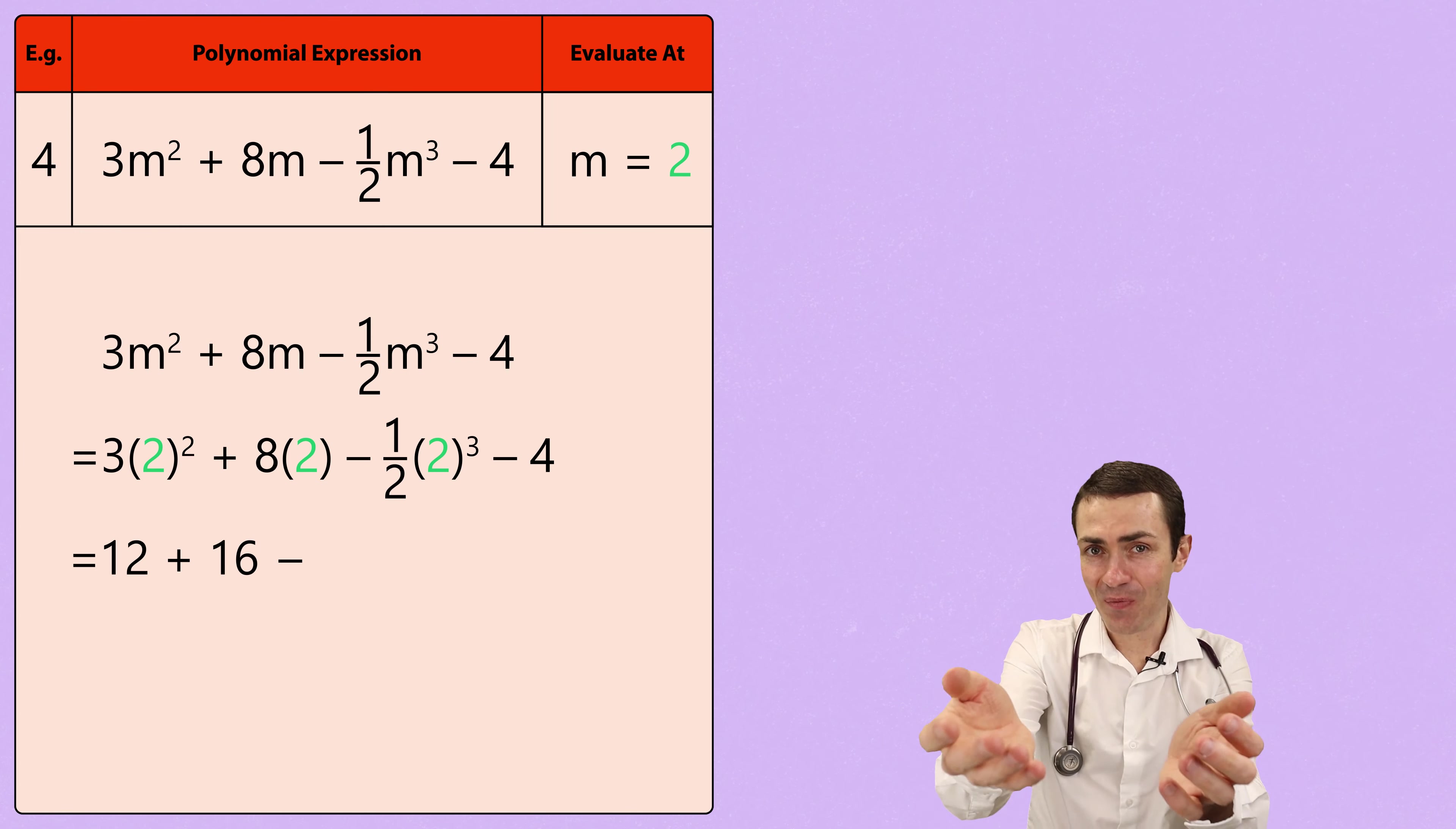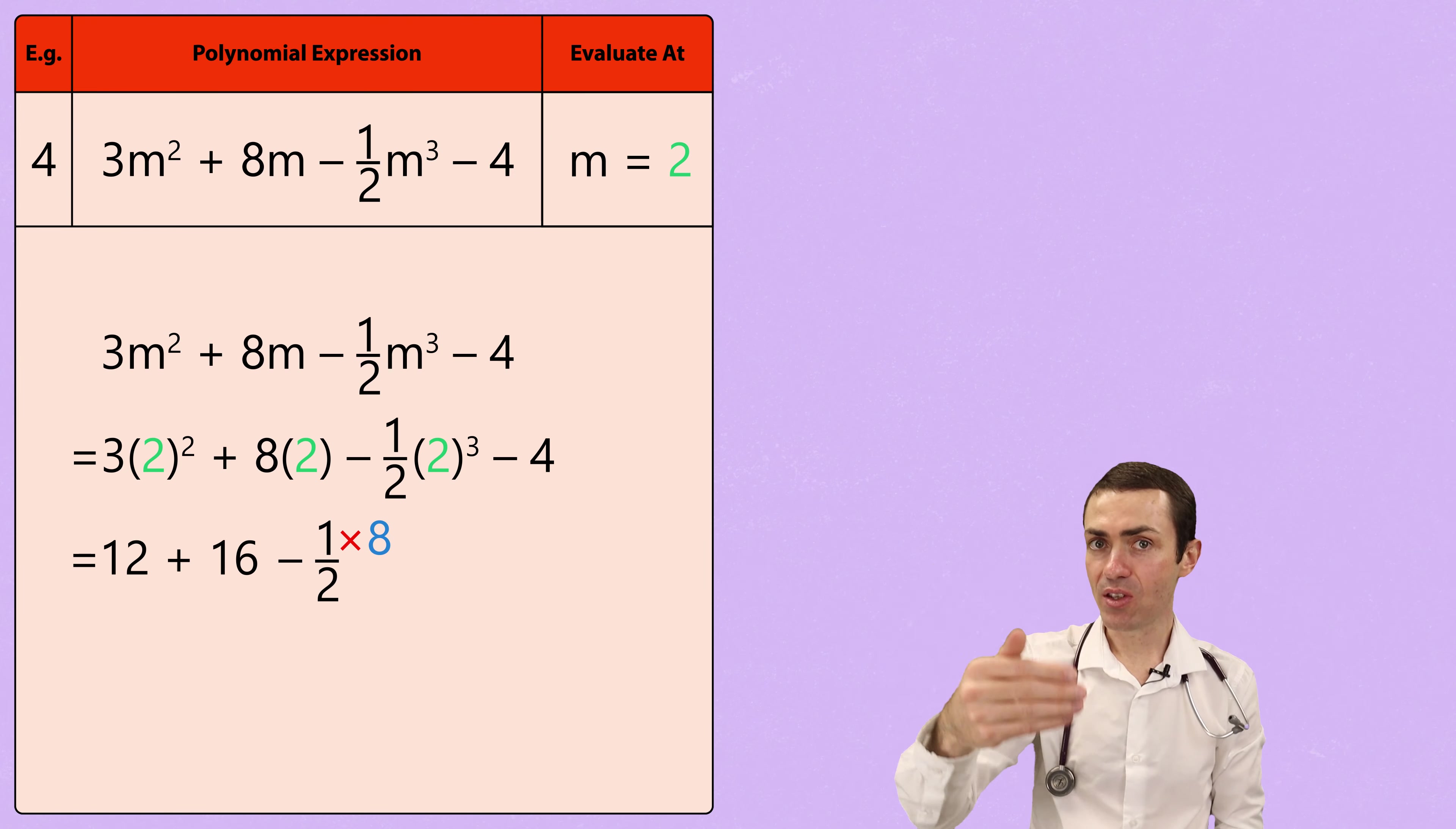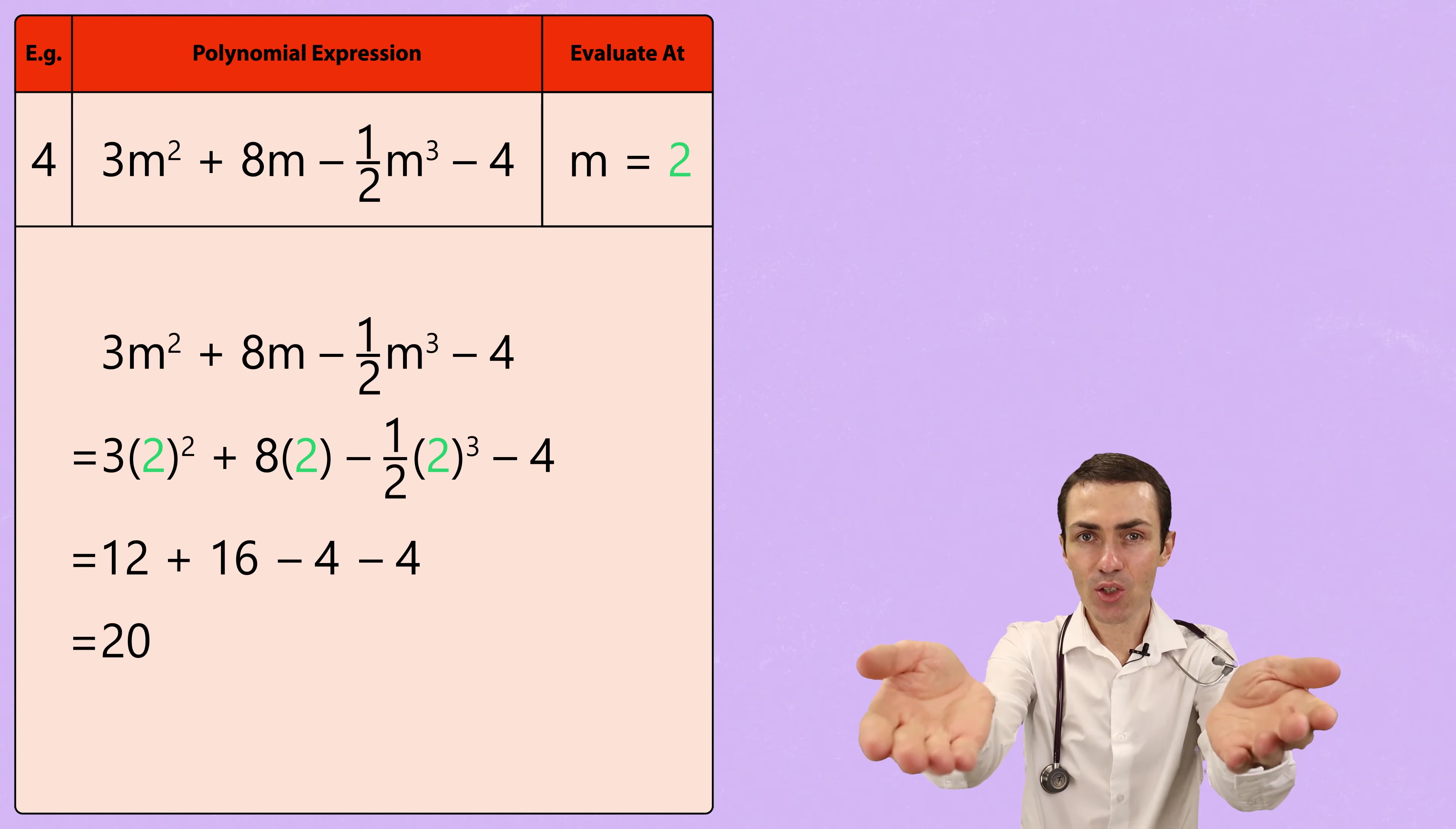Now, for the dreaded fraction. First, I would deal with the power. 2 to the power of 3 just means 2 multiplied by 2 multiplied by 2, which gives us 8. And next, I would multiply by the numerator of the fraction. Numerator just means the top of the fraction. So when we take negative 1 and multiply it by 8, we get negative 8 over 2, which simplifies to negative 4. And of course, we have to subtract 4. So, putting all of these together, when we have 12 plus 16 minus 4 minus 4, our answer is 20.